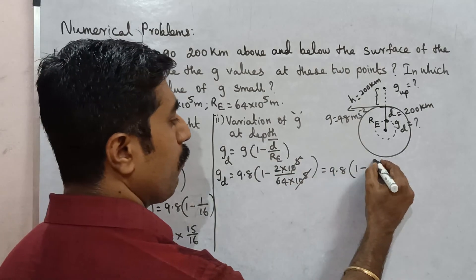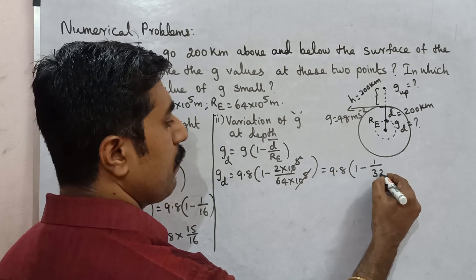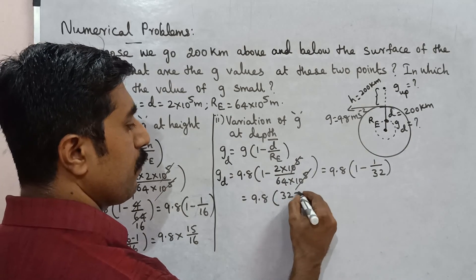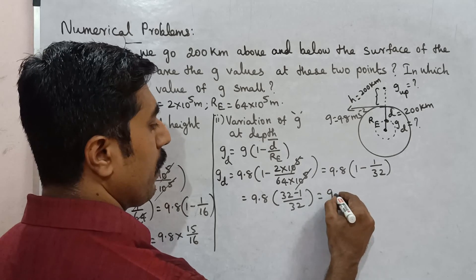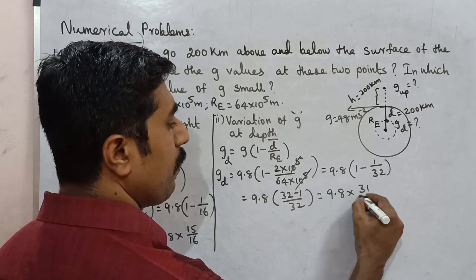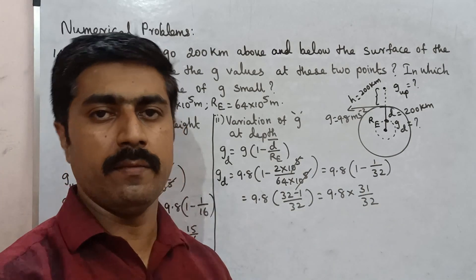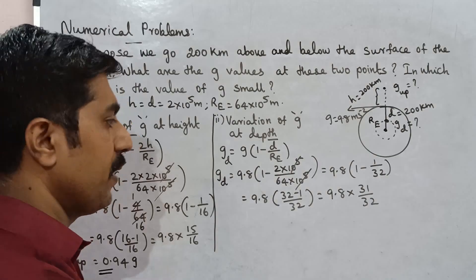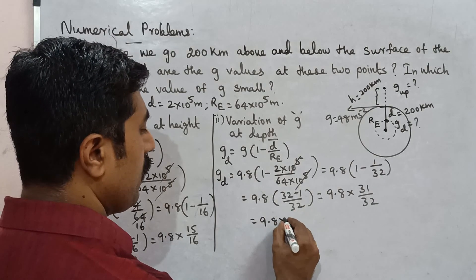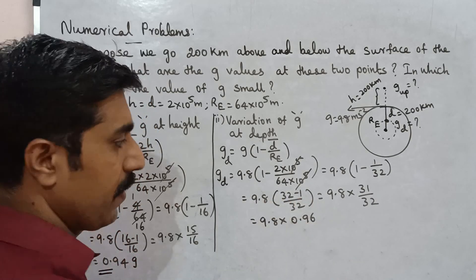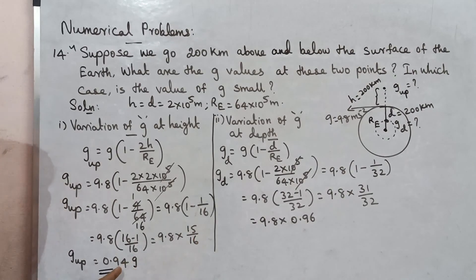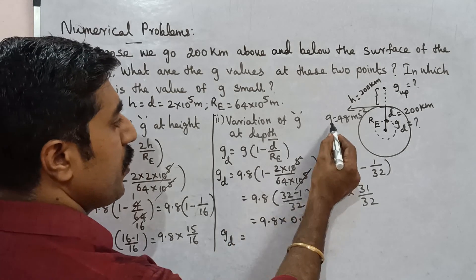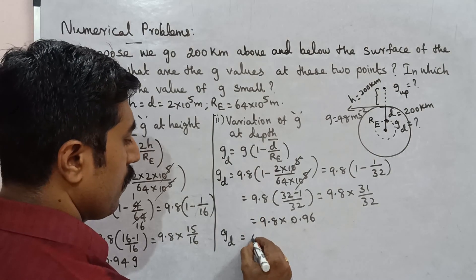Which is equal to 9.8 into 1 minus 2 by 64. 2 goes into 64 one time, giving 1 by 32. Which is equal to 9.8, LCM 32, which is 9.8 into 32 minus 1, 31 by 32. That's 9.8 into 0.96, so gd is equal to 0.96g.